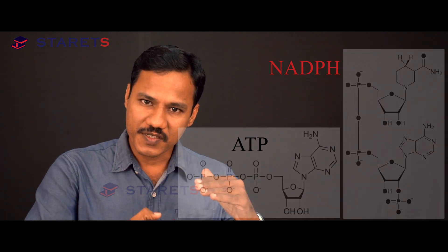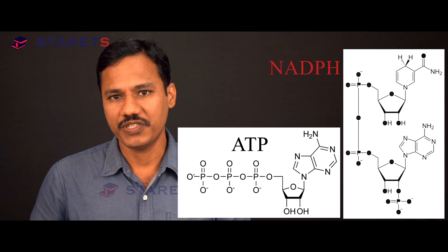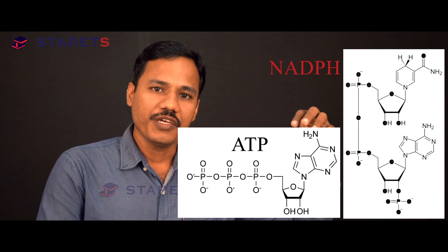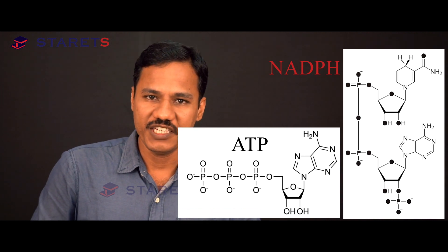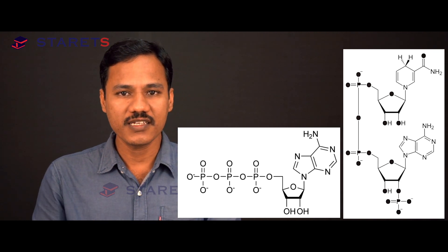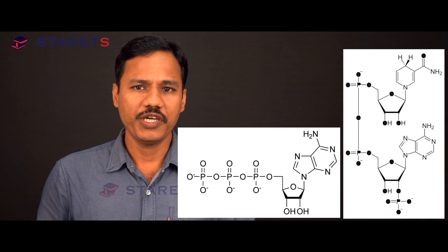Once we start processing glucose, we end up producing ATP and NADPH. In the photosynthetic reaction as well, the light energy is first trapped in the form of ATP and NADPH. Then these ATP and NADPH are utilized to convert carbon dioxide and H₂O into carbohydrates. ATP and NADPH are very important products that we need to understand, and for that we need a little chemical knowledge. In the next video, we'll learn how ATP stores energy, how NADPH stores energy, and how that energy can be utilized.